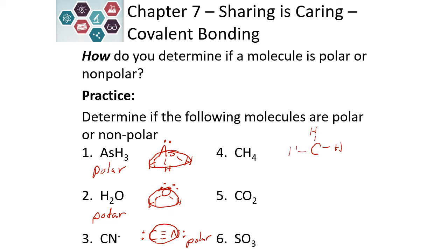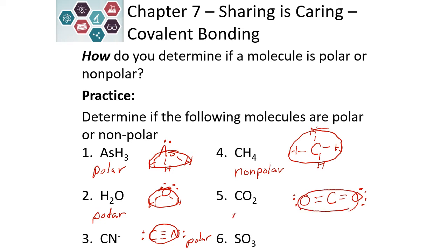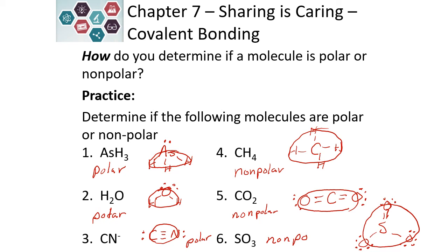Methane has carbon singly bonded to four hydrogens. We draw our circle around the outside and are only touching hydrogen, so this is a nonpolar molecule. Carbon dioxide is linear; we draw our circle touching the outside atoms, which are both oxygen — so this is nonpolar. Sulfur trioxide is trigonal planar; we draw around the outside and they are all oxygen, so this is also a nonpolar molecule.